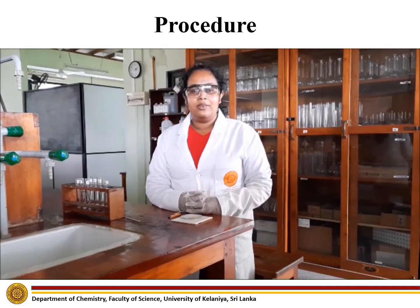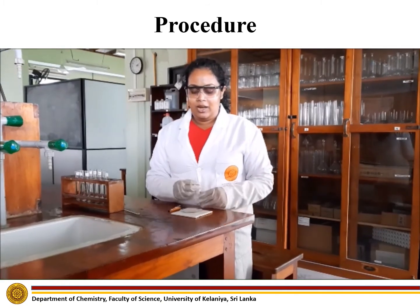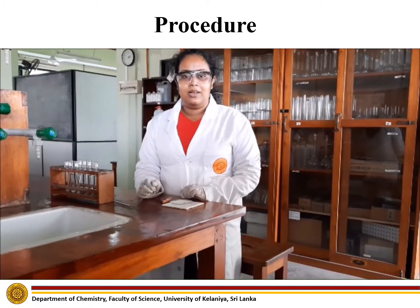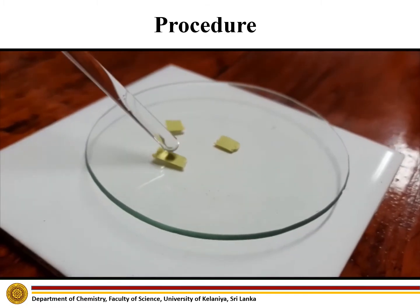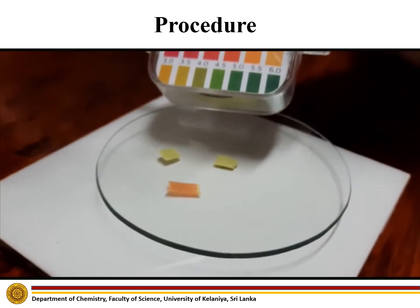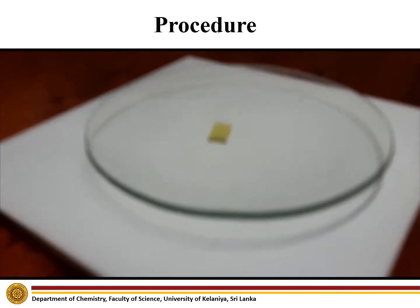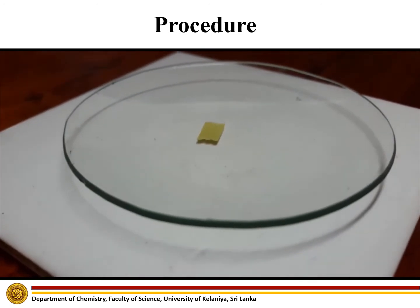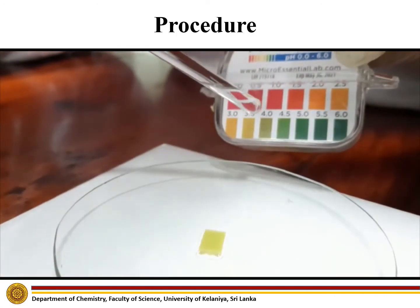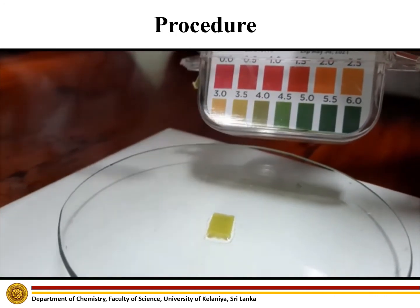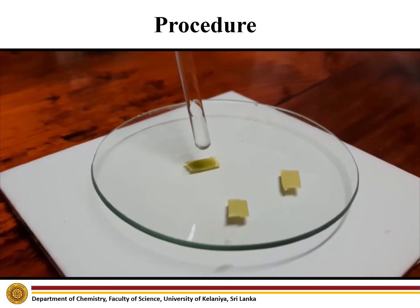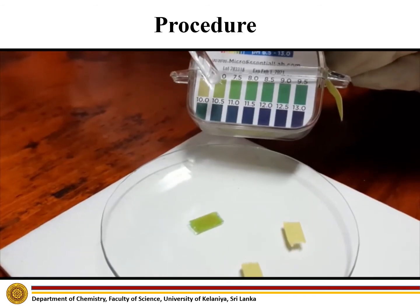To check the pH of the salt solutions, place the watch glass on a white tile and place some pH papers on the watch glass. The pH value of aluminium chloride is approximately equal to 2. Next, let's check the pH of zinc chloride salt — it is approximately 4.